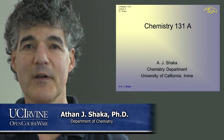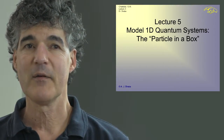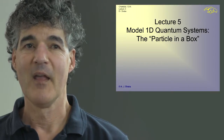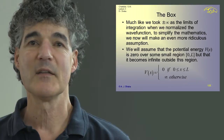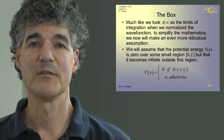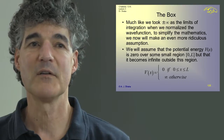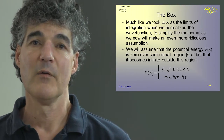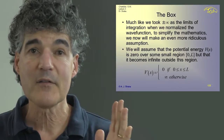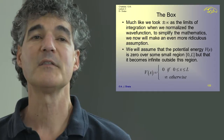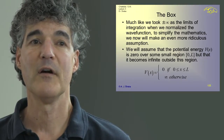Welcome back to Chemistry 131A. Today we're going to talk about 1D quantum systems, in particular the particle in a box. We're going to trap a particle inside a region of space by saying that the potential energy, if the particle gets outside this region, is going to go to plus infinity. Since a particle cannot have infinite energy, that traps the particle in the interior of the box.